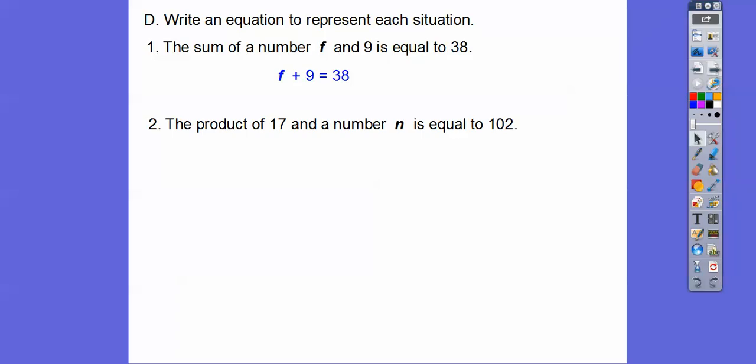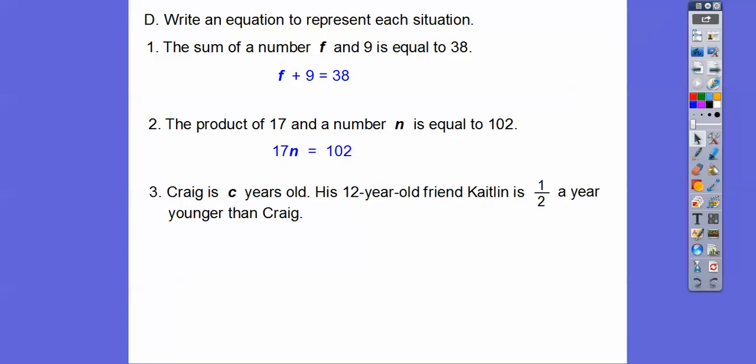The product, product means multiply. The product of 17 and a number n is equal to 102. So when we do product with a variable, we just put the variable right next to the number. So 17n equals 102. That means 17 times n.